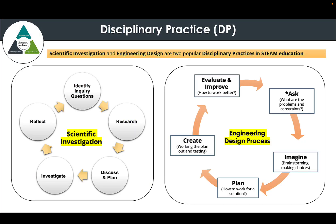Scientific investigation and engineering design are examples of common disciplinary practices in STEM-related subjects. A basic scientific investigation cycle comprises five steps: identify inquiry questions, research about the topic, discuss and plan, implement the investigation, and finally reflect on the investigation outcomes and process.